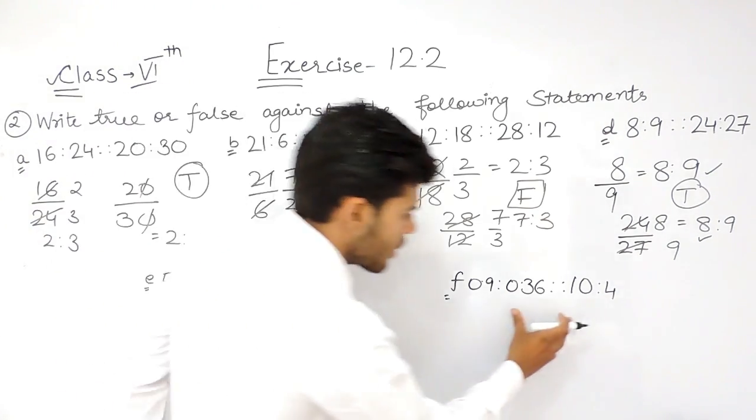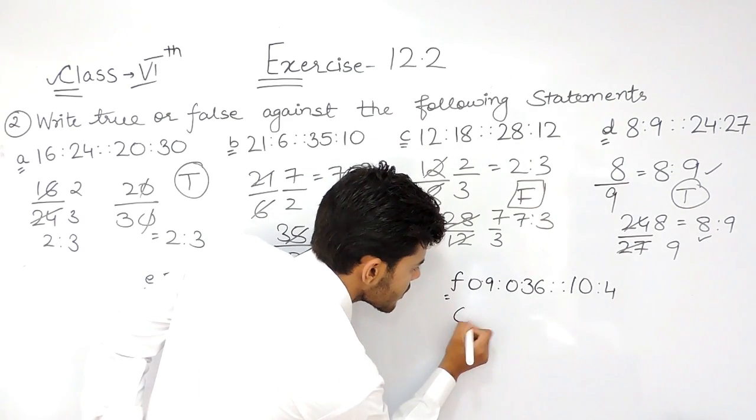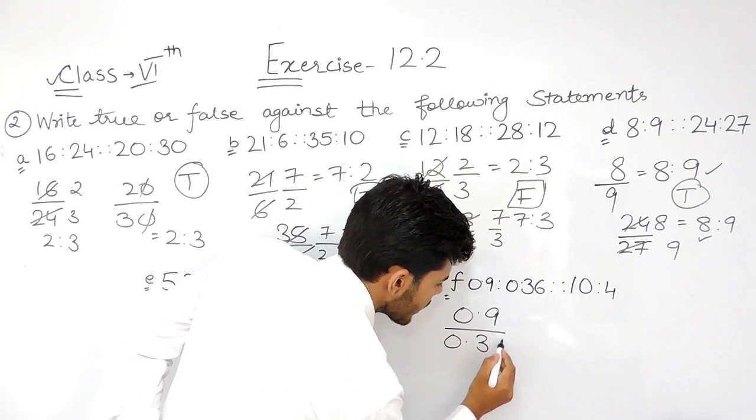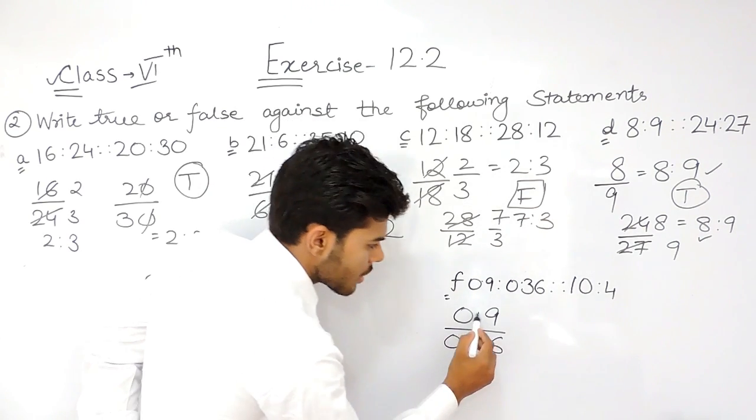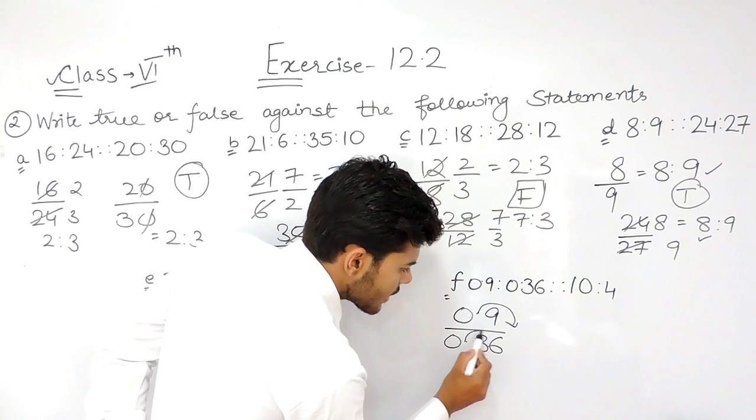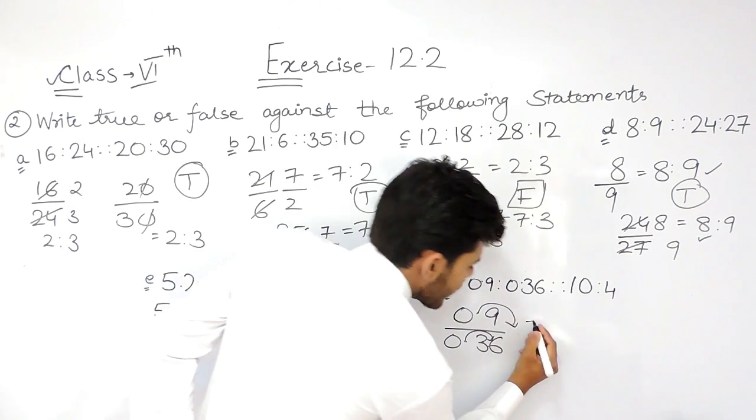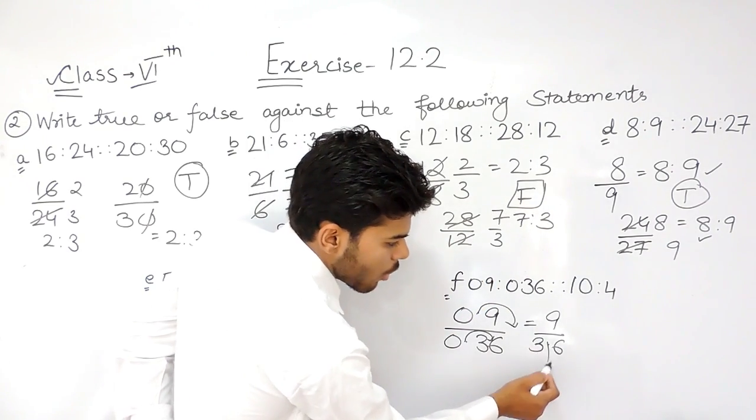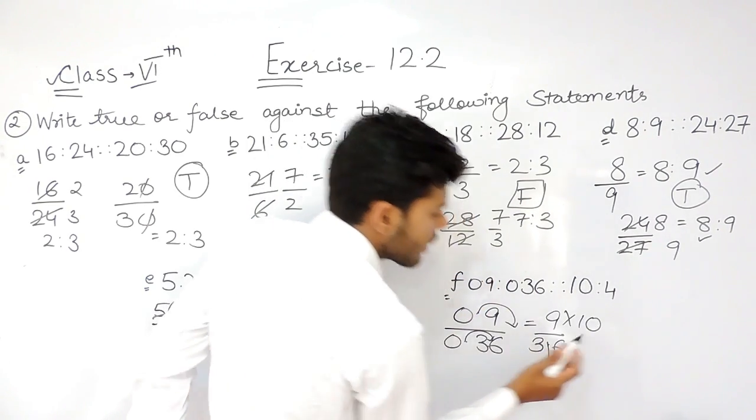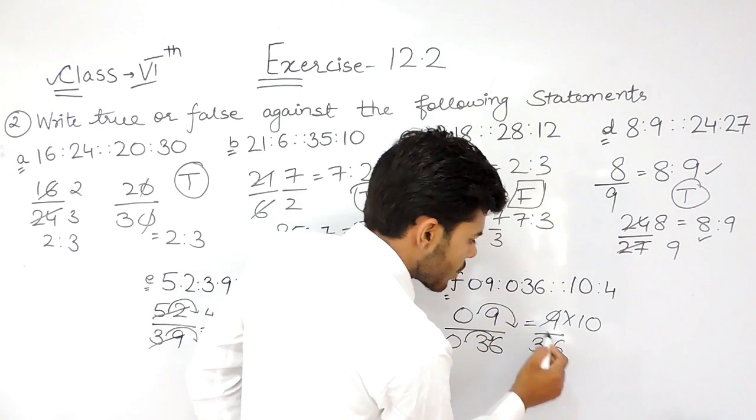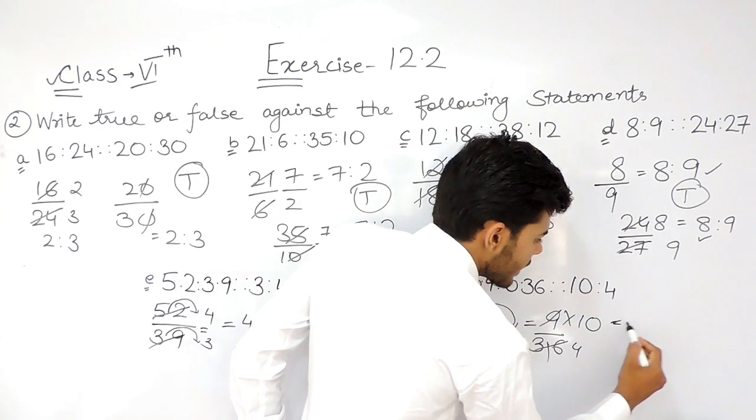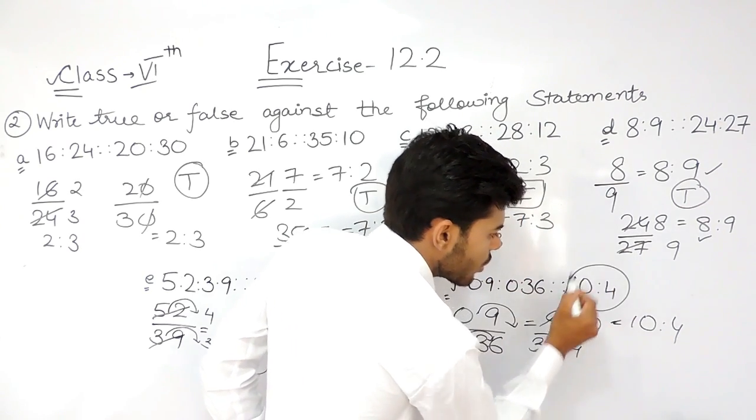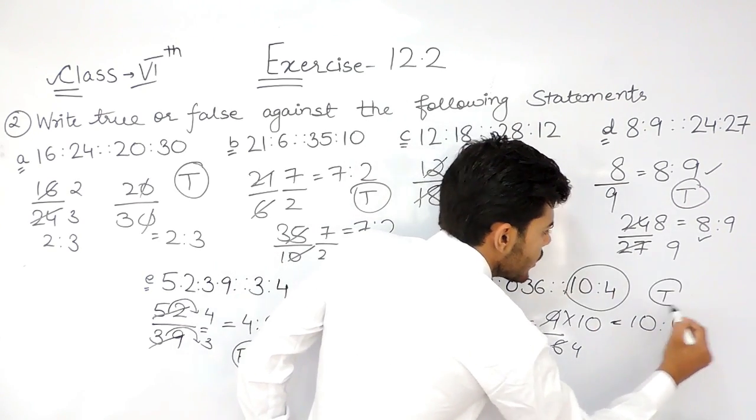And last one, it is 0.9 upon 0.36. This decimal point gets removed. This point gets shifted. So we have 90 upon 36. If we have to remove this point, this 10 will be shifted in the numerator. So 4 times 9 is 36, and that will be 10 ratio 4, which is equal to 10 ratio 4. So this statement is true.